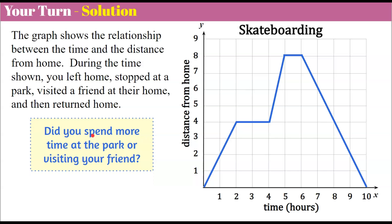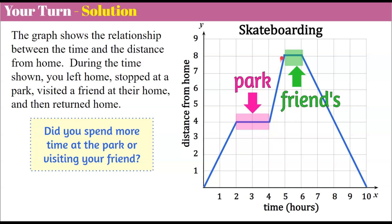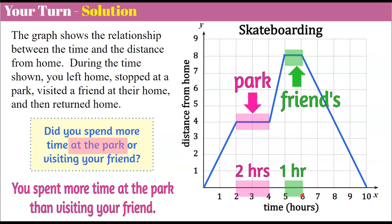Welcome back. We're asked whether you spent more time at the park or visiting your friend. We've left our home — here we're at home, and we go away from home and stop at the park. We spent this amount of time at the park from interval two to interval four. Then we continued from the park and went to our friend's house, spending time between that interval. When we were at the park, we spent from two to four — two hours. The interval at the friend's house was from five to six — one hour. So we spent more time at the park than visiting our friend; specifically, one more hour at the park.